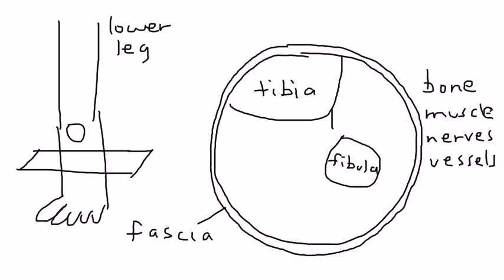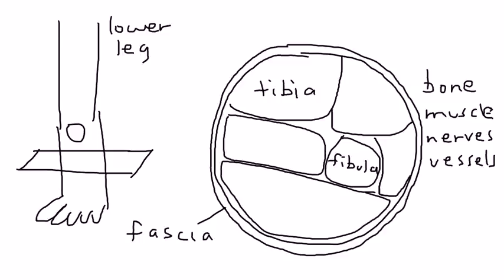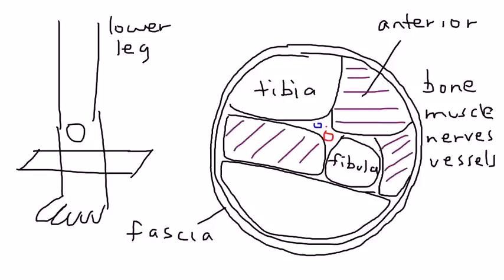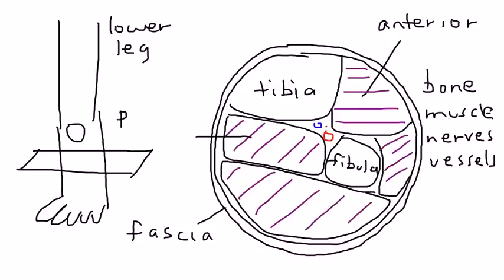Then you have the compartments. I'll draw them in first and then label them. There are vessels in here as well — more of course, but the point is more important than diagram accuracy. This is the anterior compartment — muscle, shown in purple. These two compartments here are the posterior compartments, and this one on the side is lateral.